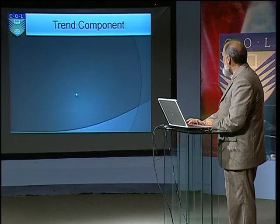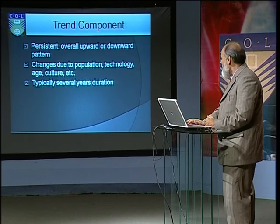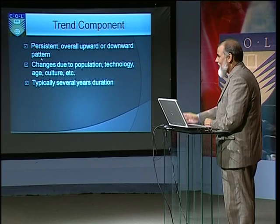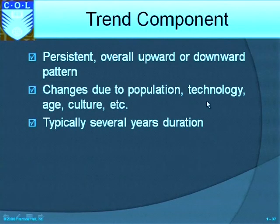The trend component is a persistent, overall upward or downward pattern. As I mentioned in the previous diagram, it was a positive trend — it can also be a negative trend, or there can be no trend. Changes are due to population, technology, age, culture, and so on. Trend is typically over several years' duration; you generally cannot have a trend over a period of a day. Trend is over a longer period of time.